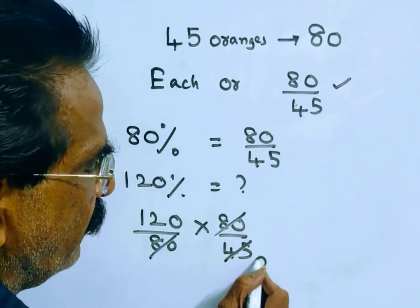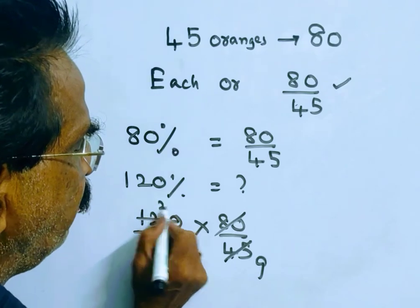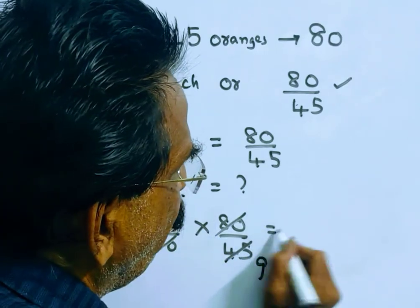80, 80 gets cancelled. 5 nines, 5 times 24. So, 24 by 9.